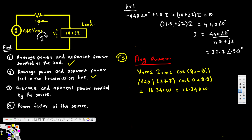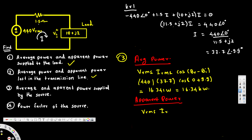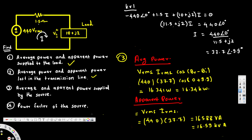For apparent power supplied by the source, S = V_rms × I_rms = 440 × 37.7 = 16,588 volt-amperes, or 16.59 kVA.